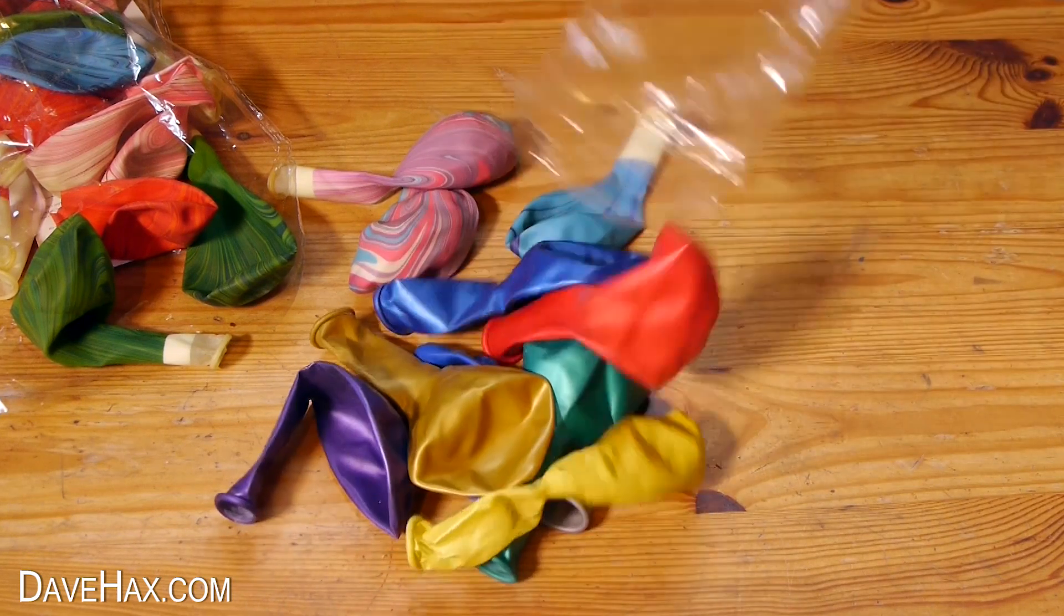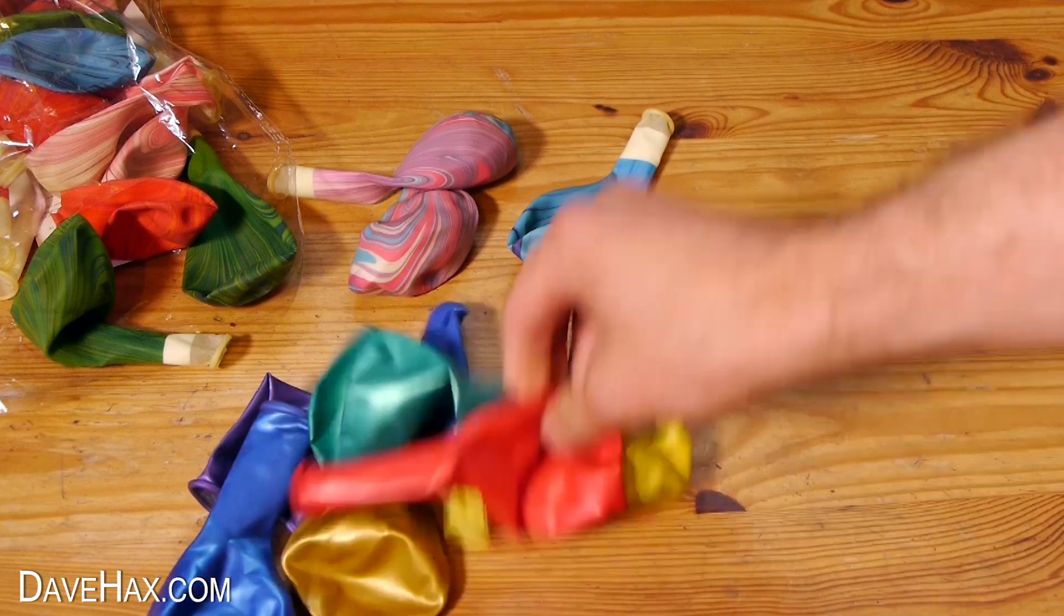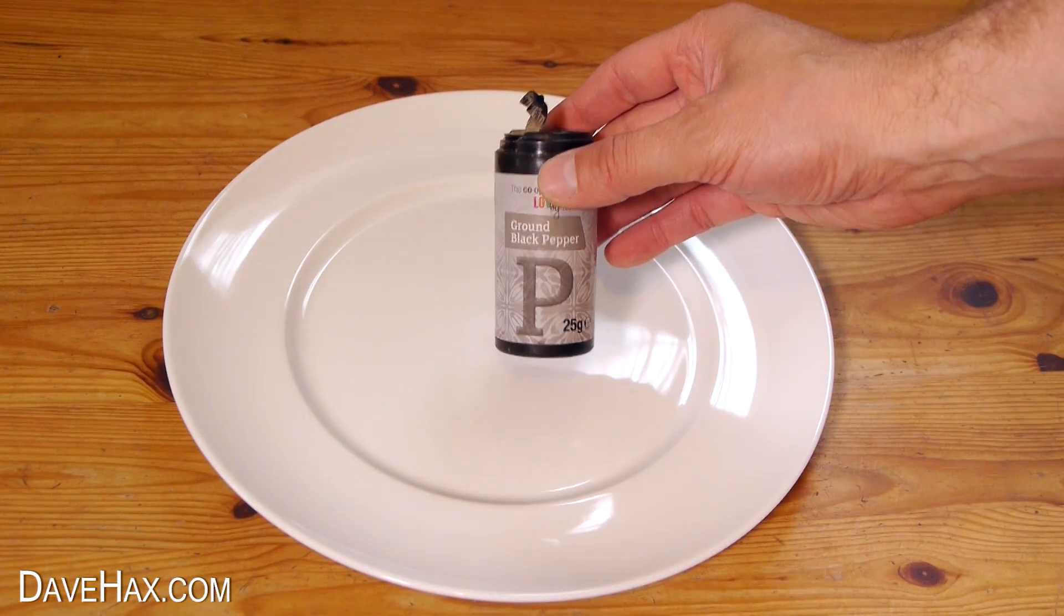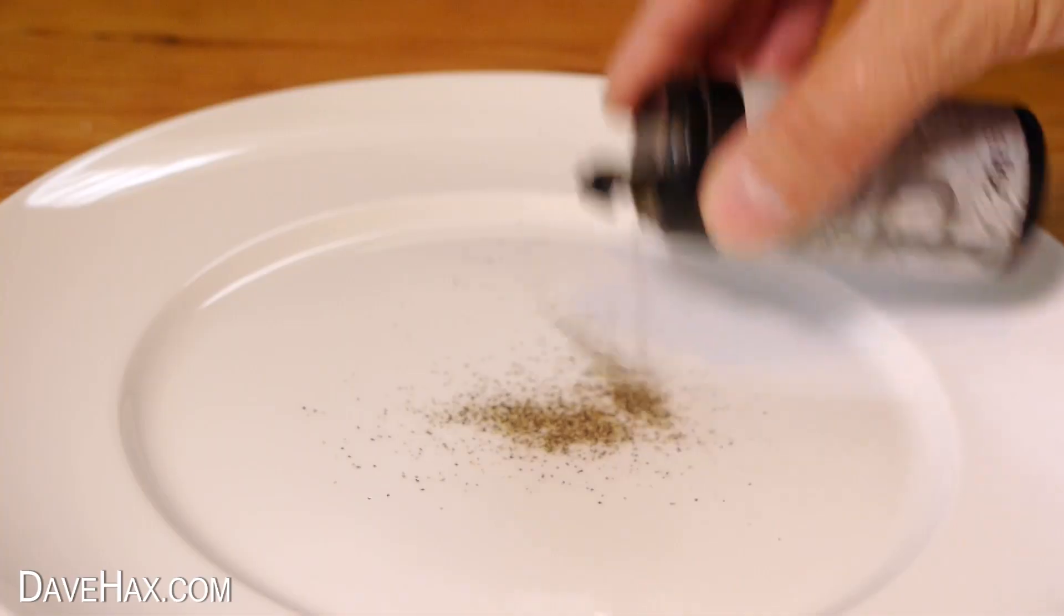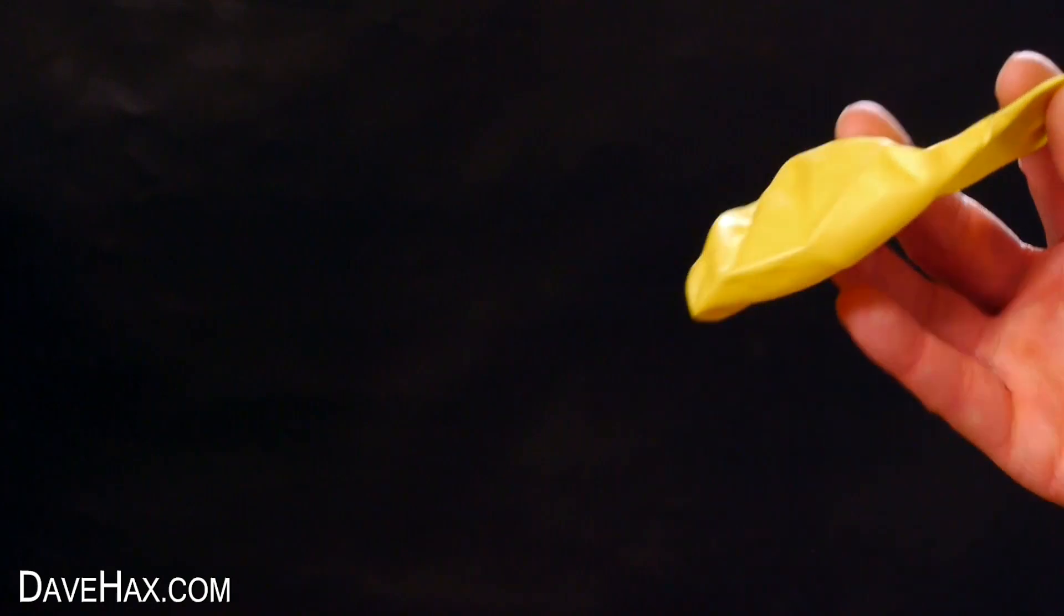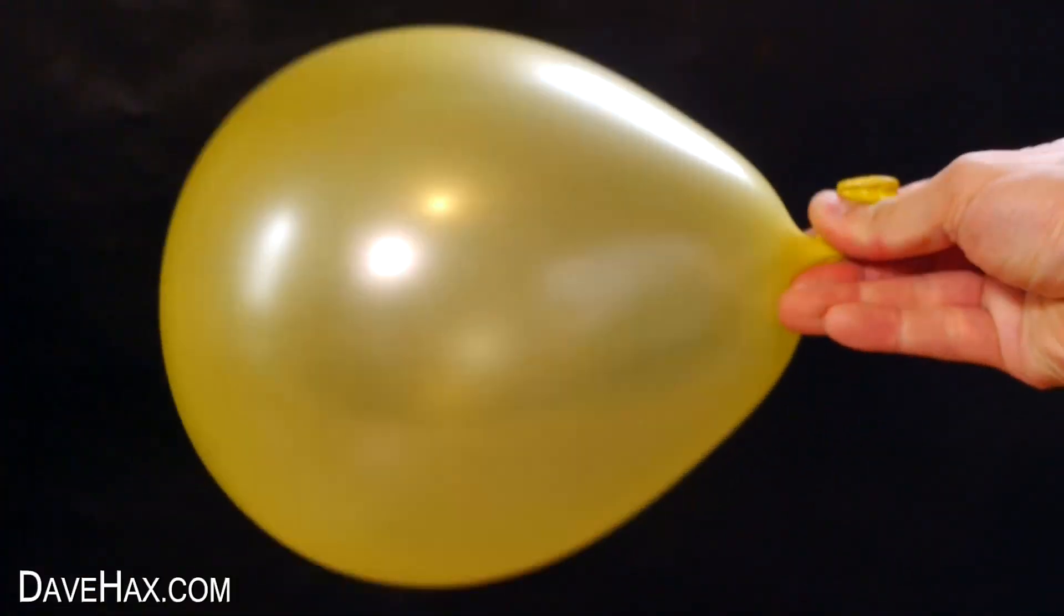Today I'm going to show you a number of cool tricks you can do with a balloon. For the first one I'm taking a plate and sprinkling on some ground black pepper. Then inflate a balloon and tie it off.